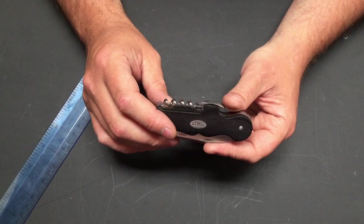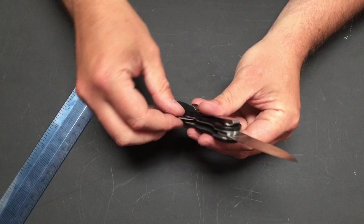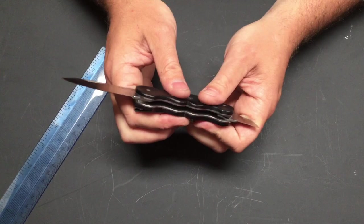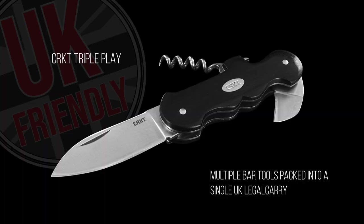Almost looks like ebony, but it is pakkawood. You've got your main blade, you've got your smaller utility blade, your corkscrew, and then you've got your bottle opener as well. So if we snap them shut, from CRKT that is the Triple Play.